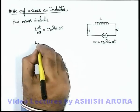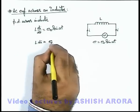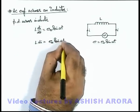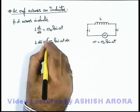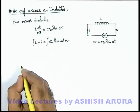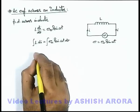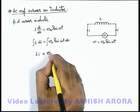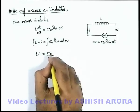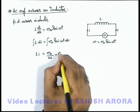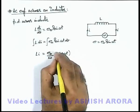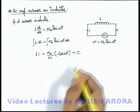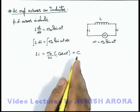Here we can rewrite it as L di equals e₀ sin(ωt) dt. And if we integrate this, on indefinite integration we get L i equals e₀ by ω, minus cos(ωt), plus the constant of integration which is not varying with time.